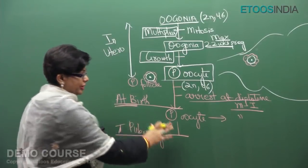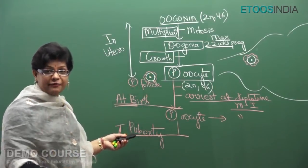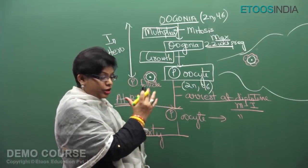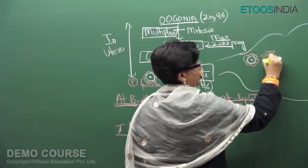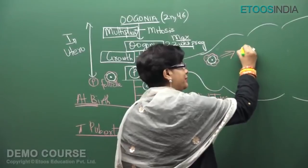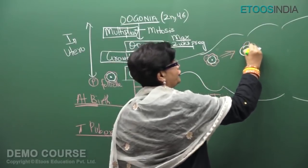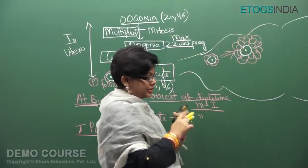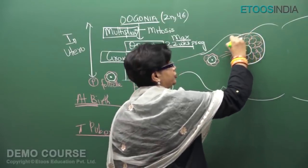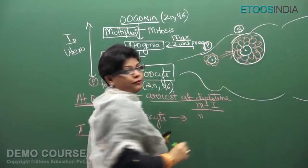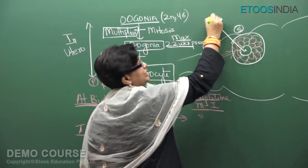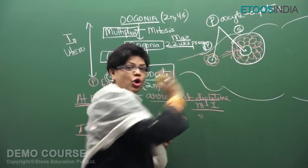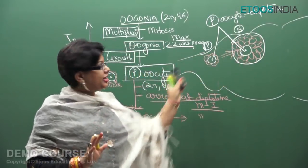At puberty, as FSH and gonadotropins increase, the primary follicle begins to grow and forms a secondary follicle. The secondary follicle still contains the primary oocyte, but now has multiple layers of follicular cells plus a new connective tissue layer called the theca forming around it. The primary oocyte inside remains arrested in the diplotene stage of meiosis 1.